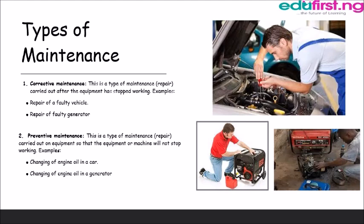The second type is preventive maintenance. This is a type of maintenance carried out on equipment so that the machine will not stop working. An example is changing the engine oil in a car — according to the manufacturer's specification, engine oil should be changed every six months or every 5,000 kilometers. We do this to prevent the vehicle from developing a fault that would make it unavailable for use. Another example is changing the engine oil in a generator — just as it applies to the car, it also applies to the generator, because changing the oil makes the generator perform better.